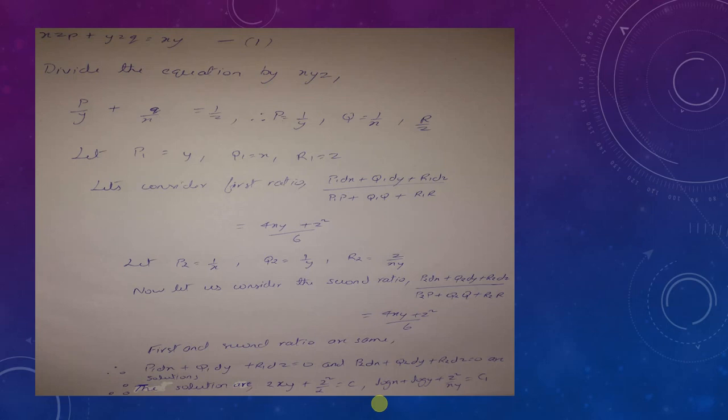Now consider the second ratio: P2 dx plus Q2 dy plus R2 dz, all over P2·P plus Q2·Q plus R2·R. The first and second ratios are equal, so the two solutions are P1 dx plus Q1 dy plus R1 dz equals 0 and P2 dx plus Q2 dy plus R2 dz equals 0. Hence the solutions are 2xy plus z² divided by 2 equals C1, and log x plus log y plus log z equals C2.